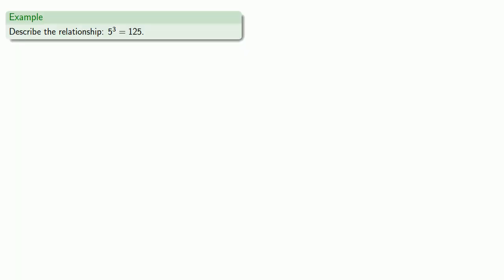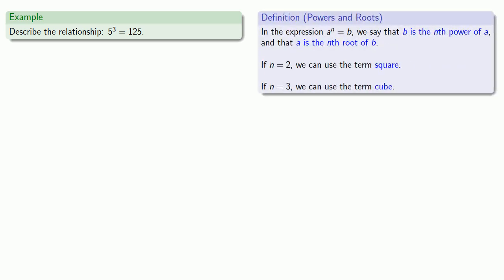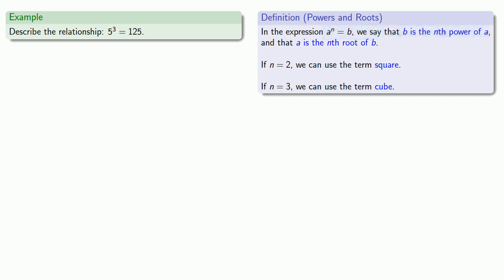We might describe the relationship 5 to power 3 equals 125. Pulling in our definition: in the expression a to power n equals b, b is the nth power of a. Comparing our expression to our definition, we can say that 125 is the third power of 5.